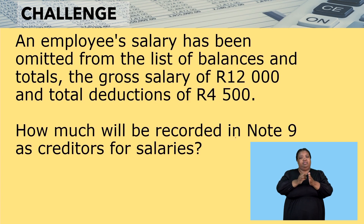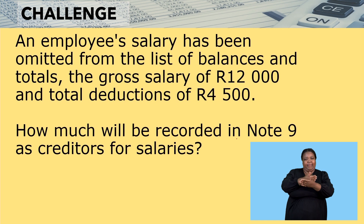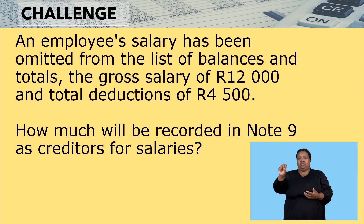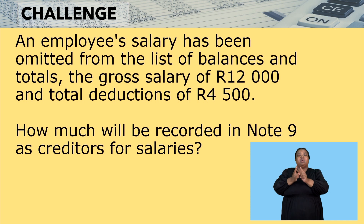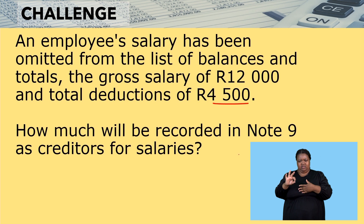I have a challenge question for you, which reads: an employee salary has been omitted from the list of balances and totals — the gross salary of $12,000 and total deductions of $4,500. How much will be recorded in note nine as creditors for salaries?